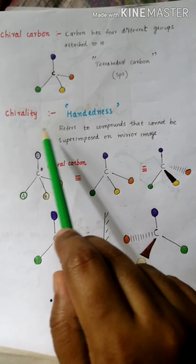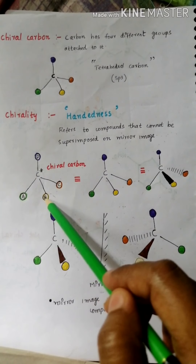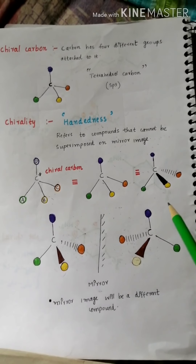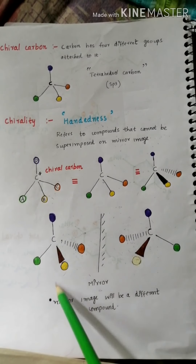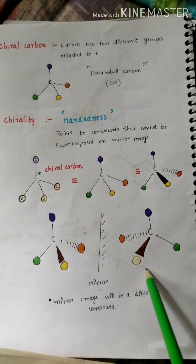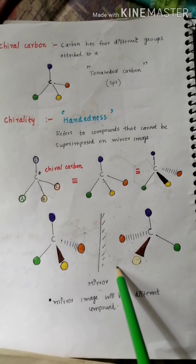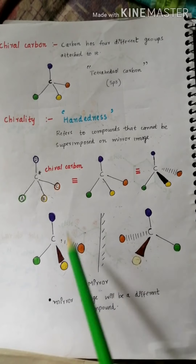For example, take a chiral carbon attached with groups A, B, C, and D — four different groups — and then take its projection mode. The object is placed here and this is the mirror image of the corresponding compound. Looking at both compounds, the mirror image is a different compound — not exactly the same as the object. The groups present on the right side of the object are present on the left side in the mirror image, meaning the two compounds are different.